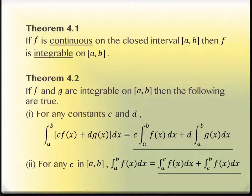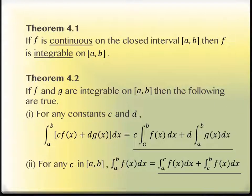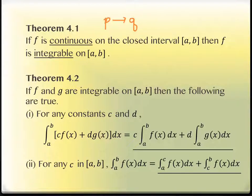Theorem 4.1 says that if you have a function that's continuous, then it's integrable. That should feel like a theorem we've had before, where it says if you have a function that's continuous, it's differentiable. This is a one-direction statement. The notation we use in logic for a statement like this means: if the first part happens, then the second part follows. It doesn't necessarily mean you can go the other direction. Just because it's integrable doesn't necessarily mean it was continuous. So if you've got something continuous, you know you can integrate it.